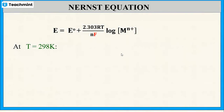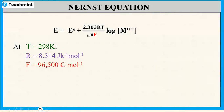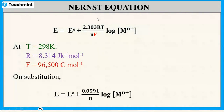When the temperature is 298 K, R = 8.314 J/K/mol and F = 96500 C/mol. Substituting these values, the Nernst equation simplifies to: E = E⁰ + (0.0591 / n) × log[Mⁿ⁺]. This is the Nernst equation at 298 K.